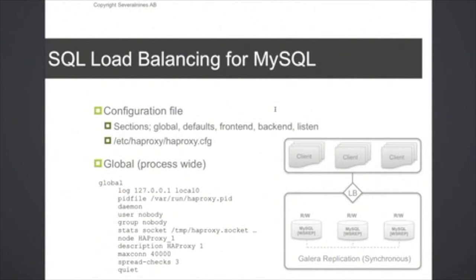On the side here you have the global section which is the process-wide settings. You can see here that we specify that we want to log to syslog. We have a maxconn setting value of 40,000, which means that this process is able to handle at most 40,000 connections coming into it. There's also a spread-checks option set here, which means that we want to spread the health check requests that HAProxy makes towards the back-end servers by randomizing the requests with 3%. So if we have many HAProxy instances running, we don't want all these process instances to hit the database back-end at the same time. The node parameter is also good to have if you have multiple processes running on the same host, so you can more easily identify which HAProxy instance is doing what in the logs.